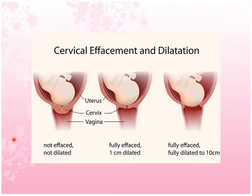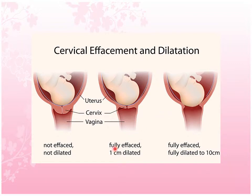There are progressive cervical changes in true labor. Upon vaginal exam, the nurse will notice that the cervix is softening and effacement begins. Dilation is also progressive — from not effaced or dilated to fully effaced and fully dilated. Bloody show is also present, and the cervix moves from a posterior to an increasingly anterior position.